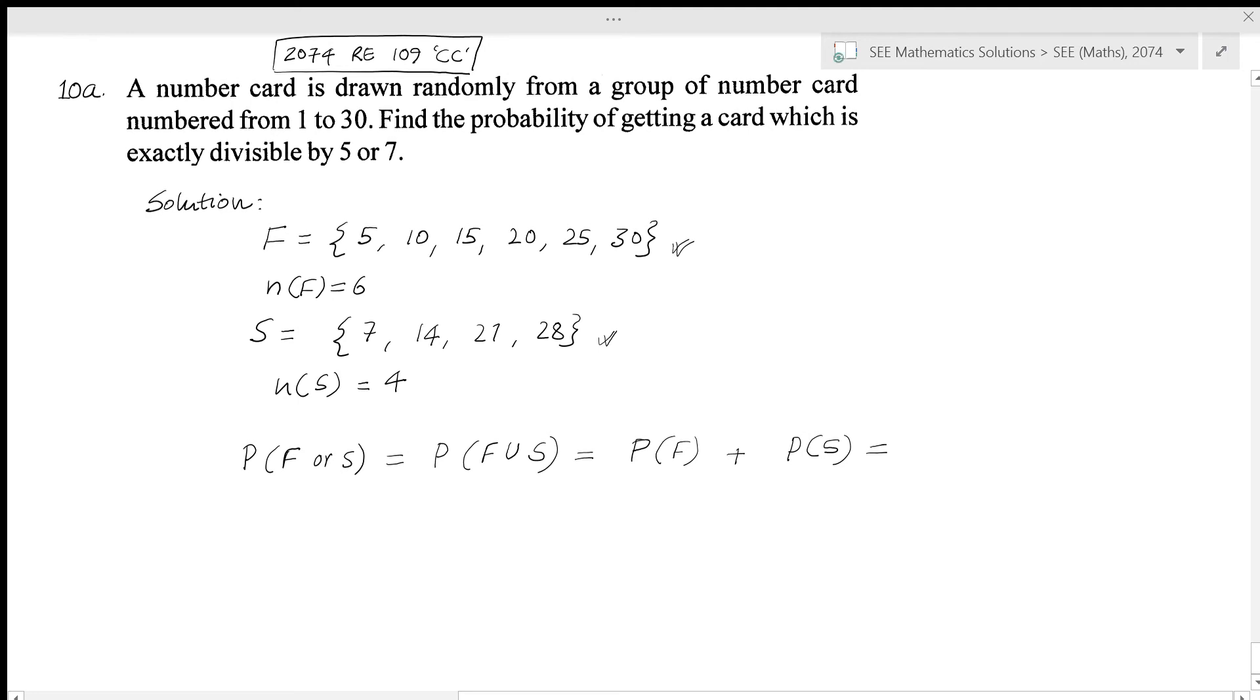So this formula is enough. The probability of finding F means we have total 6 terms which are divisible by 5, and we have total 30 total cards. That is our sample space. So it will be 6 out of 30 plus 4 out of 30. This gives 10 out of 30, so it is equal to 1 by 3, and this is our answer.